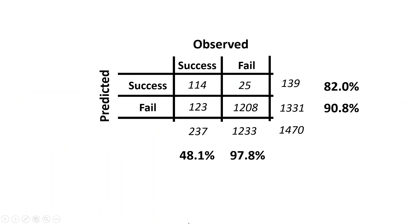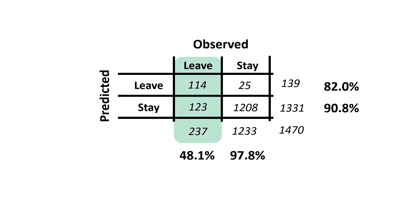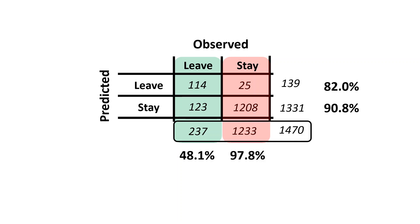Here's our confusion matrix. Somewhat counterintuitively, success in our model means that an employee left while failure means that they stayed. So I'm replacing those labels with 'leave' and 'stay,' which better represent what we want to discuss. The values in the columns show how many employees were originally observed either staying at or leaving the firm — 237 employees left while 1,233 stayed, for a total of 1,470.